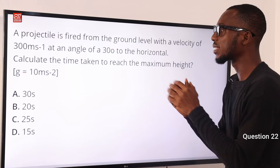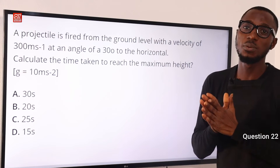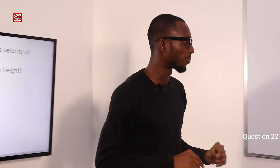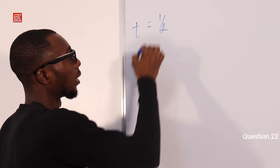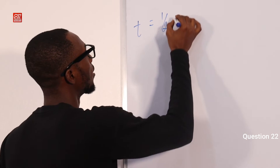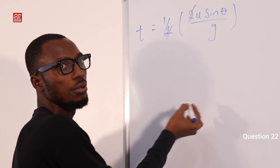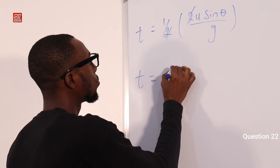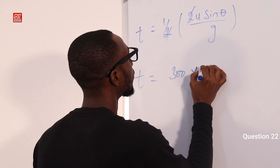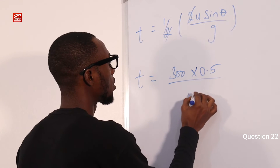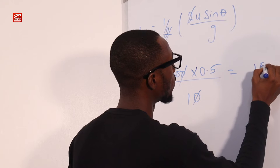To reach that maximum height, the time taken is actually half of the total time of flight. Time of flight is 2u sin theta over g, so the 2 strikes out, giving t equals u sin theta over g. U is given as 300, theta is 30 degrees, so sin theta is 0.5, and g is 10. So we have 300 times 0.5 over 10, that gives you 15 seconds.